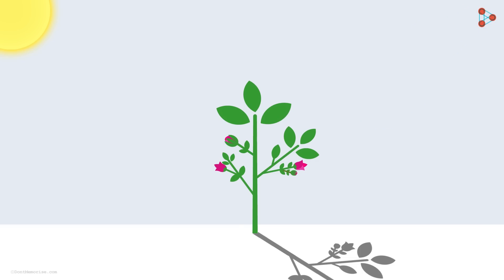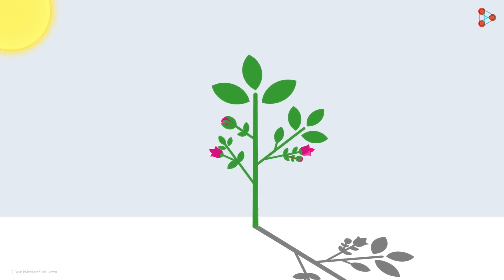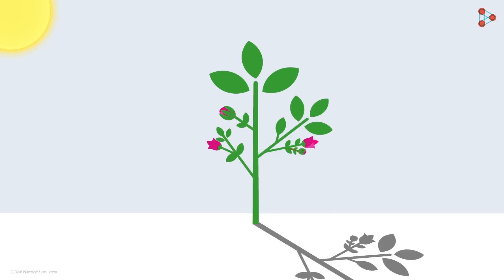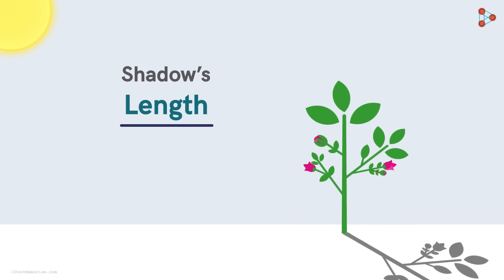It's dependent on the position of the source of light. Anything else that you can think of? If the height of the plant grows, then the shadow's length will also change, right? So the length of the shadow is dependent on the position of the source of light and the height of the plant too.